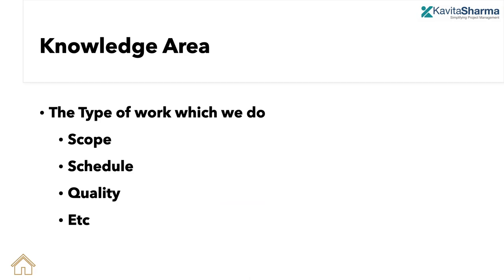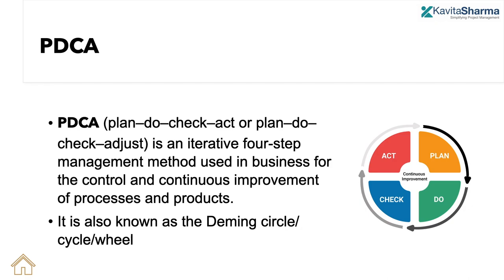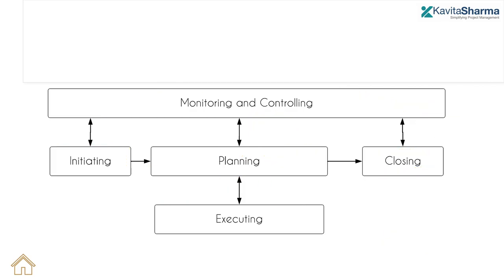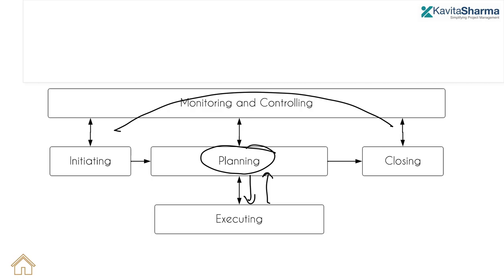Knowledge areas are a category of the kind of work which we do — scope is one type, schedule is another, and so on. PDCA is one way to understand the overall processes and process groups: Plan, Do, Check, and Act. We plan, the team does the work, and we keep checking and acting. This is depicted in the process chart where I plan, the team executes, input goes back into planning, and monitoring and controlling is the umbrella process throughout.